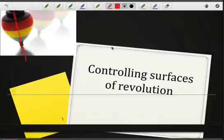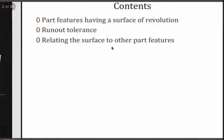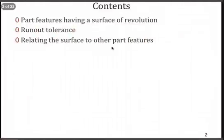So we've got an axis of symmetry about which that surface revolves. And as you note here, we're not saying that the radius is the same throughout the feature, but it does have some symmetry. So we'll look at part features that have this surface of revolution about an axis and use runout tolerance to control the deviation of that surface.